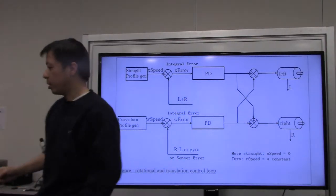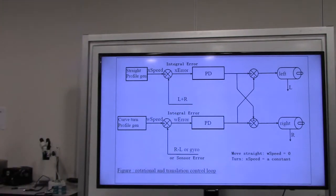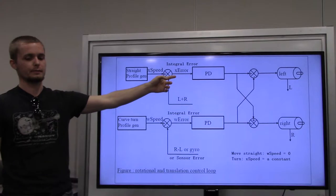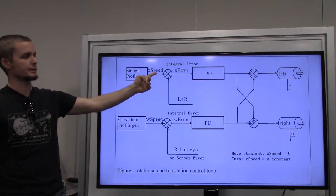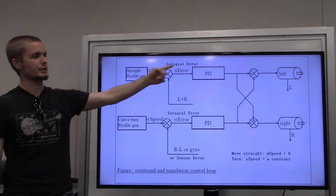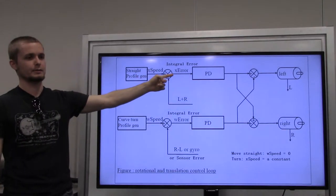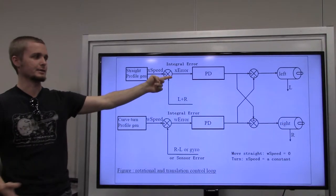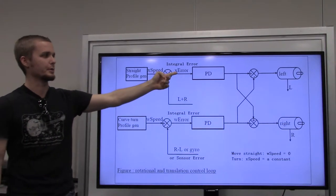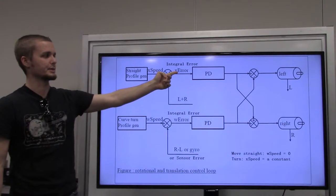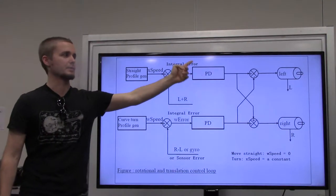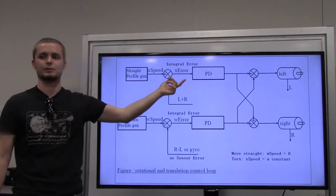To expand on what was said about accumulating the error: this is a velocity error, and if you accumulate it you're taking the integral. The integral of velocity is position. So you're applying PD to your position — that's why it's called a positional PD controller.